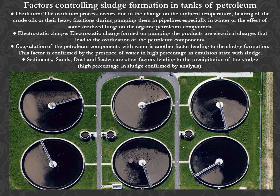Factors Controlling Sludge Formation in Tanks of Petroleum. Oxidation: The oxidation process occurs due to the change in ambient temperature, heating of the crude oils or their heavy fractions during pumping them in the pipelines, especially in winter, or the effect of some oxidized fungi on the organic petroleum compounds.